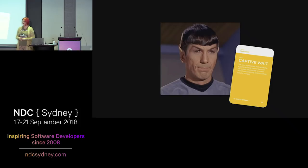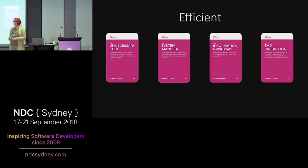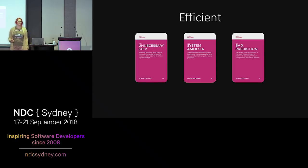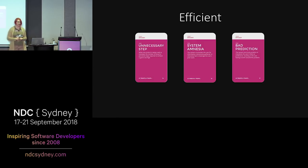Being efficient is also something we as humans like — to do things in as few steps as possible. So let's look at three of the traps in 'efficient.' A UI is efficient when the user perceives that it performs actions in as minimal steps as possible. The key word here is perceived — it doesn't have to be fewer steps, but it should feel like fewer steps. 'System amnesia' is when the user is prompted for information that the system has or learned previously, but still doesn't remember.